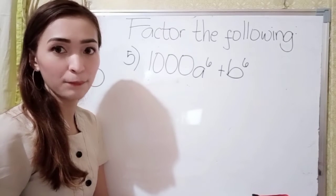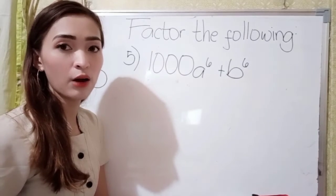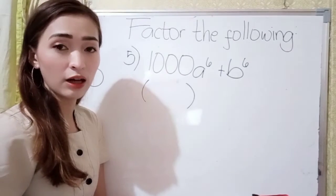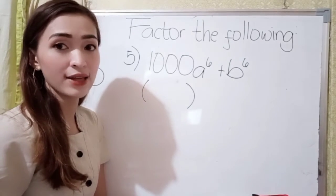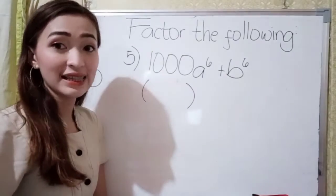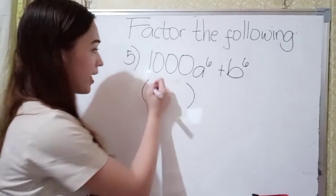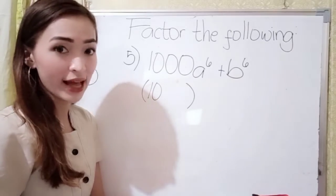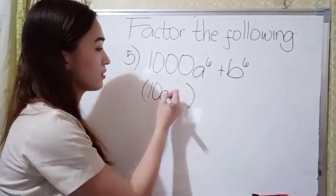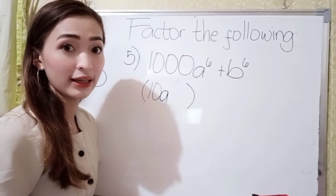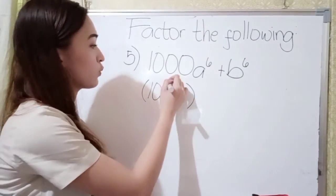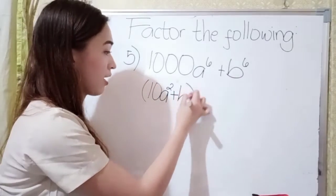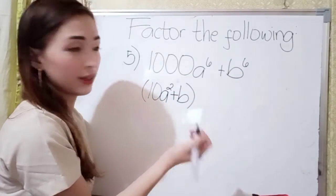For number 5, our last example, we have 1000a to the 6th power plus b to the 6th power. Let's think of a number that if we multiply itself thrice, the answer is 1000. Or, what is the cube root of 1000? That is 10, because 10 times 10 is 100, times 10 is 1000. We have a here, so just write a. The exponent: divide it by 3 — 6 divided by 3 is 2. This is plus, so write plus here. Next, we have b, and 6 divided by 3 is 2.